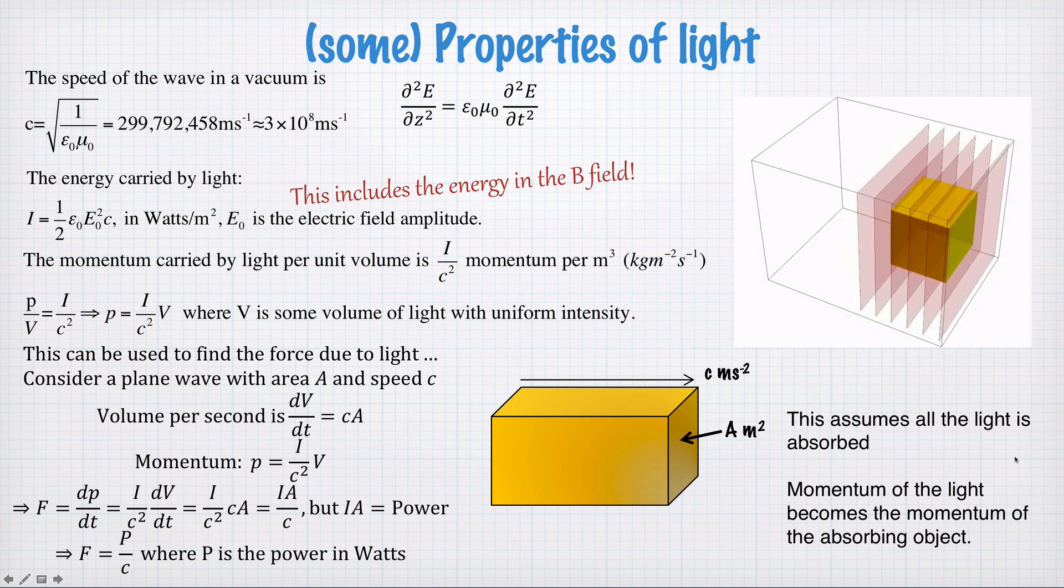Now this assumes that all the light is absorbed. The momentum of the light becomes the momentum of the absorbing object. If I shine this light on a mirror, and the light's reflected perfectly, then I'll get twice the momentum, because the light is reflected back and the change of momentum is twice what I've just calculated.